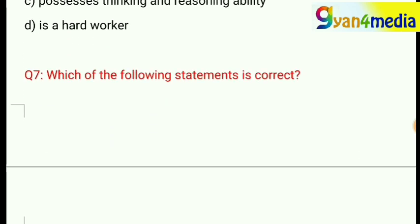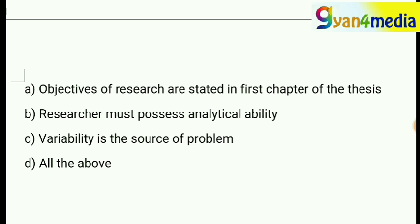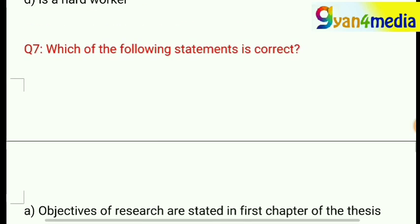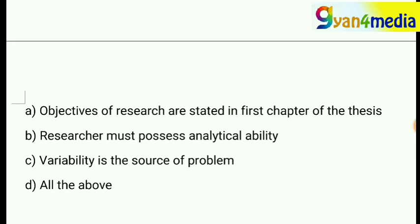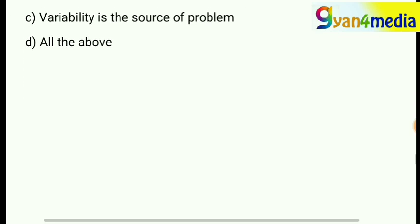Question number 7: which of the following statements is correct? Statement A says objectives of research are stated in the first chapter of the thesis; B says a researcher must possess analytical ability; option C says variability is the source of problem; and option D says all of the above. The correct answer is option D — all of the above.